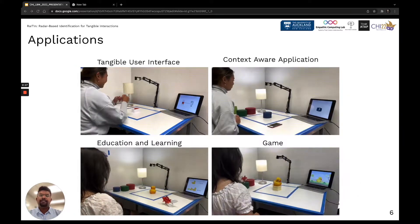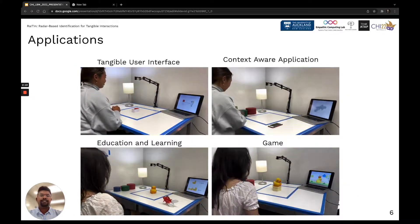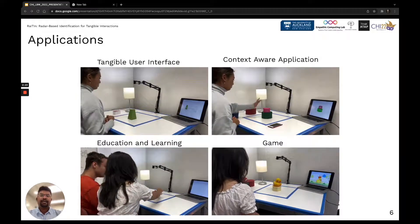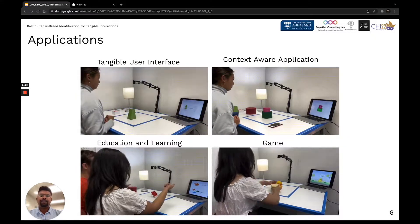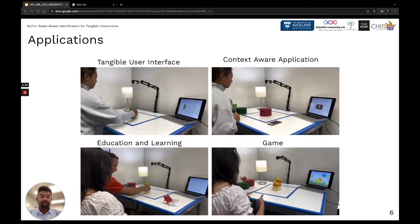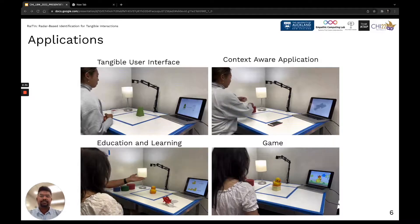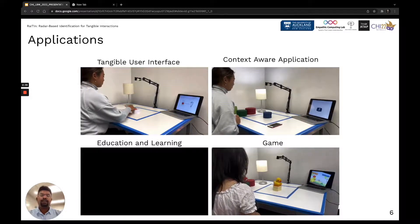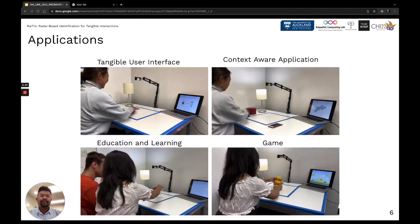We implemented the following examples to showcase the application opportunities of RaITIn. Our system is low cost and has an easy setup and can be used to make any tabletop surface into an interactive surface. This allows many possible applications in tangible user interface, context-aware applications, learning creativity tools, and entertainment and other domains.